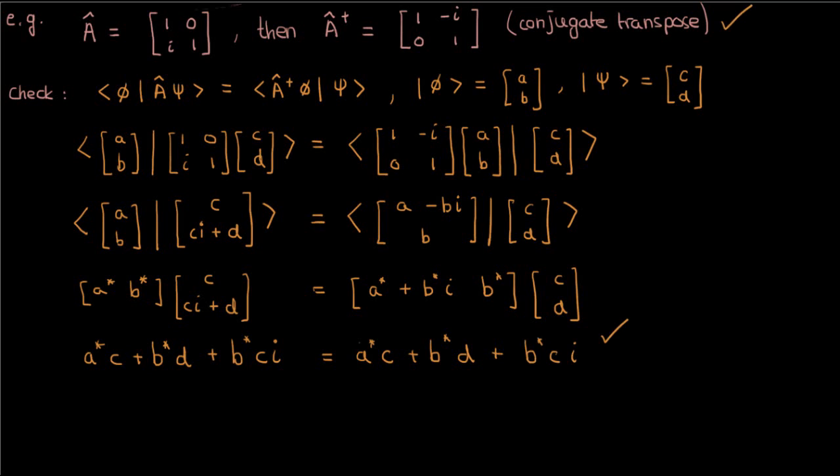Just a quick note that when I went from this line to this line, I changed the vector inside the bra of the inner product to its conjugate transpose when I took it out, mainly because the bra, as I mentioned in a previous video, is just the conjugate transpose of the ket vector.